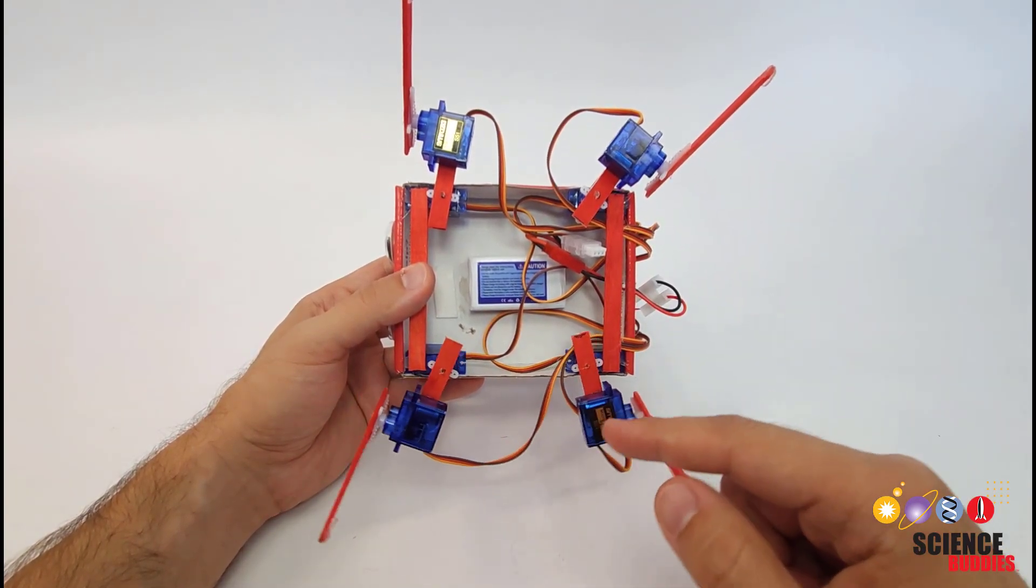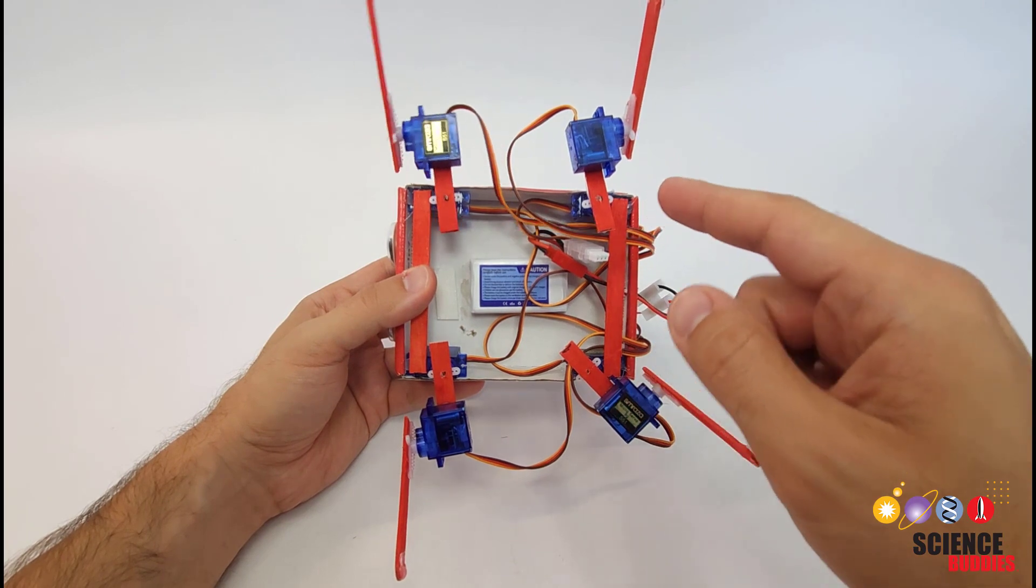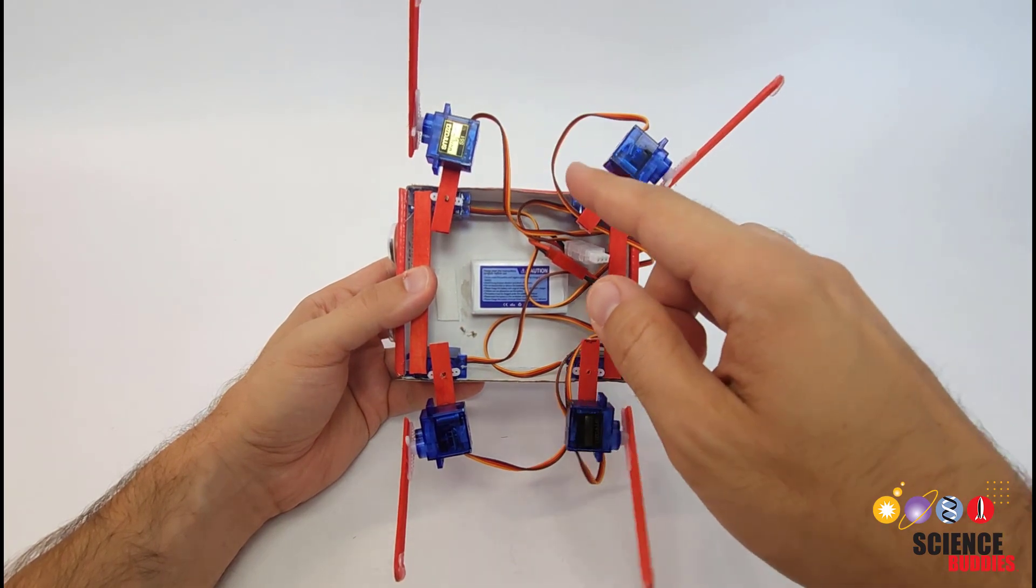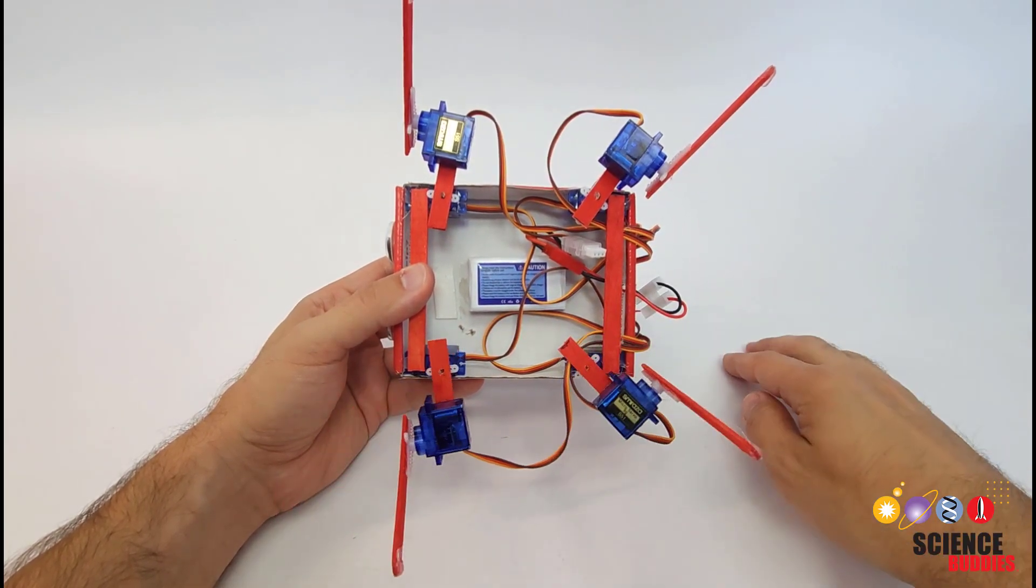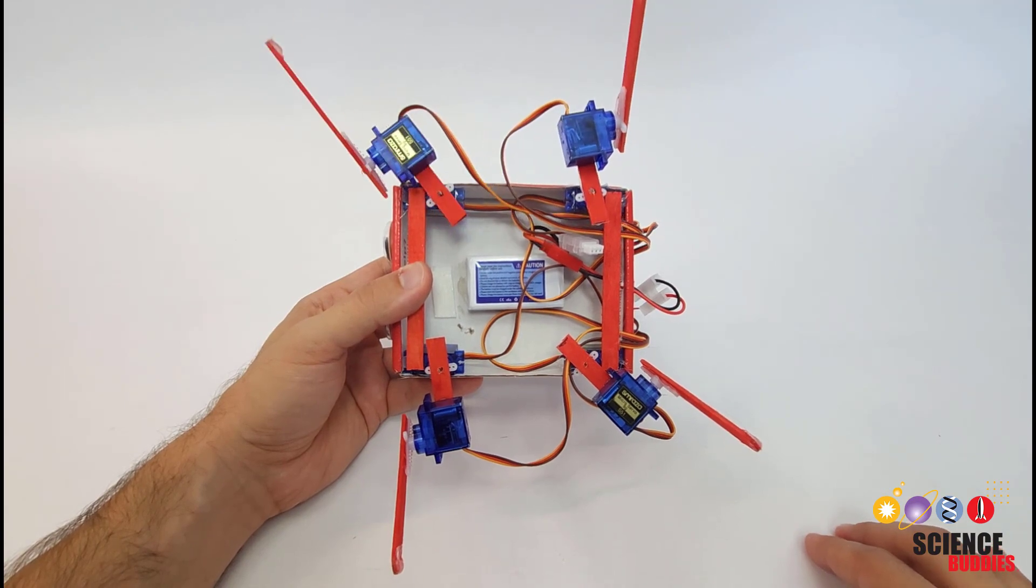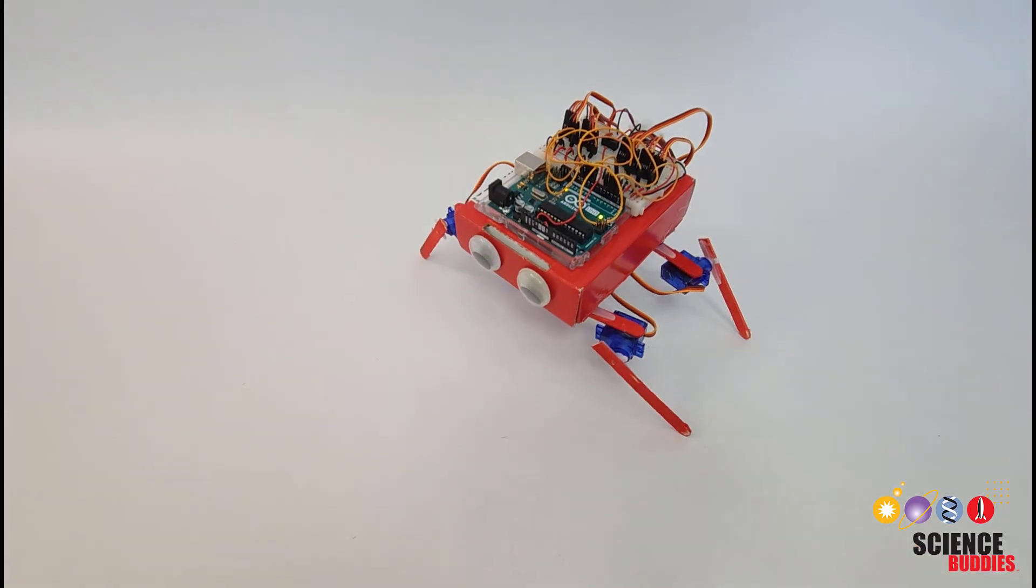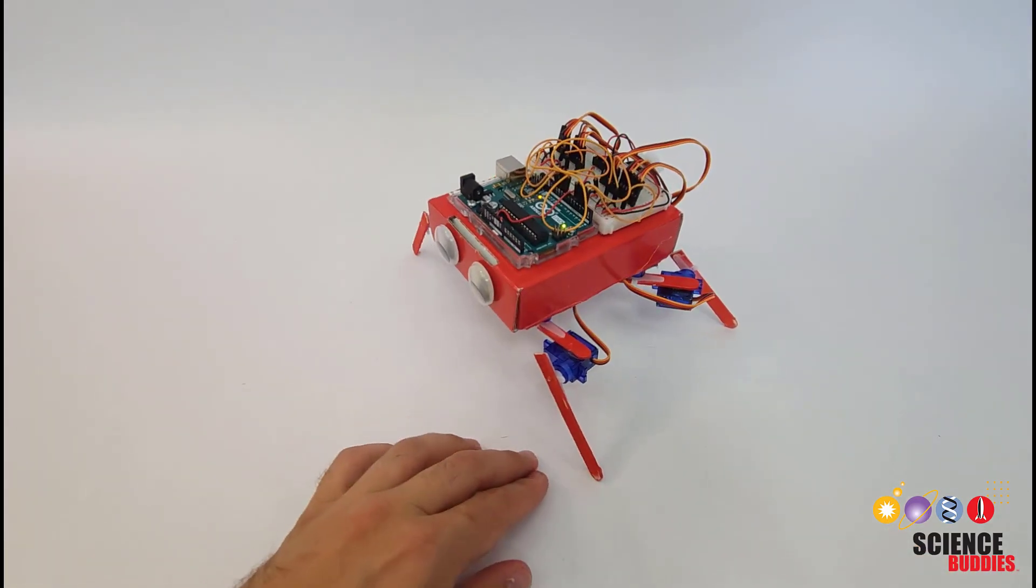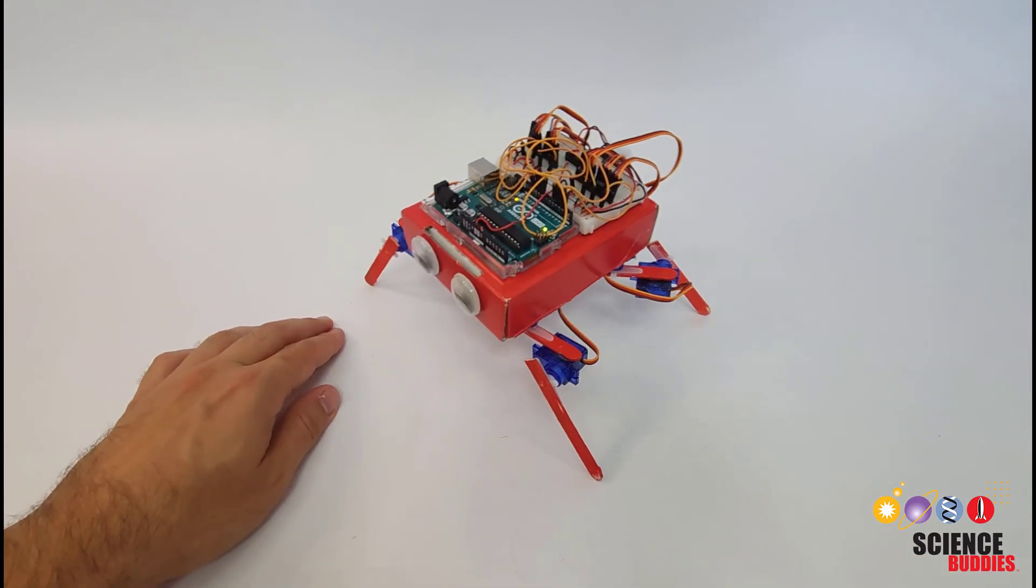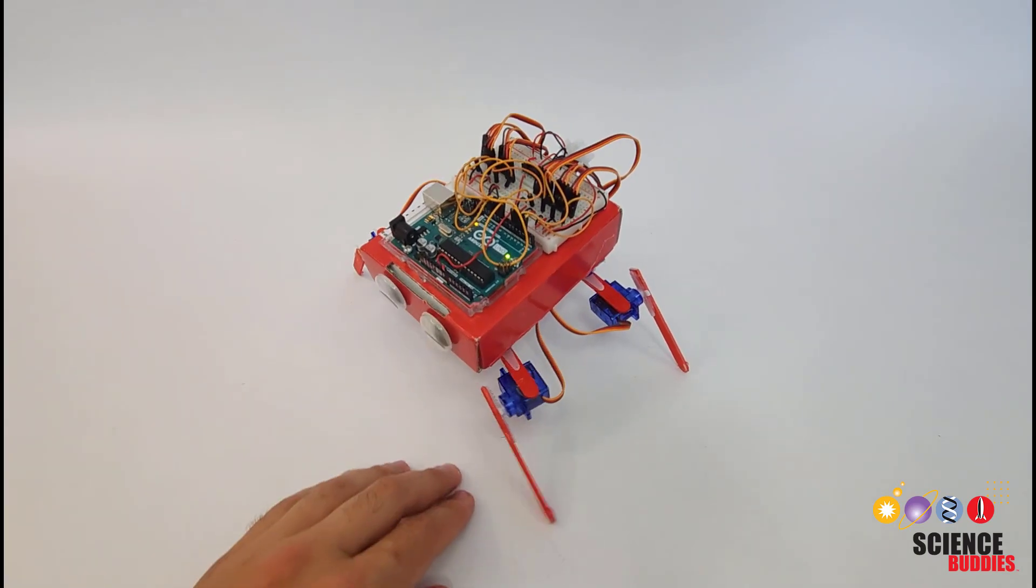So here for example I have an alternating gait where the robot moves both legs on one side forward and then pulls backward with both legs on that side. So that's what you saw earlier in the video where the robot's gonna move both legs on one side forward and then kind of pull itself forward on that side, alternate and do so on the other side, and then repeat.